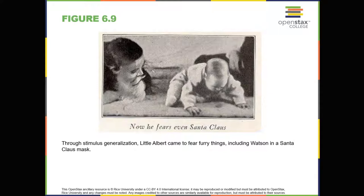Whereas Pavlov's work with dogs involved the conditioning of reflexes, Watson believed the same principles could be extended to conditioning human emotions. Thus began Watson's work with his graduate student Rosalie Rayner and a baby called Little Albert. In 1920, Watson was chair of the psychology department at Johns Hopkins University, where he met Little Albert's mother, Arvila Marite, who worked at a campus hospital. Watson offered her a dollar to allow her son to be the subject of his experiments. Little Albert was exposed to various neutral stimuli including a rabbit, a dog, a monkey, masks, cotton wool, and a white rat — and was not afraid of any of them.